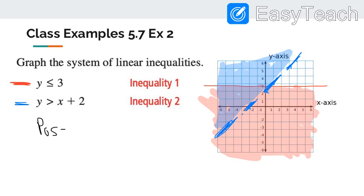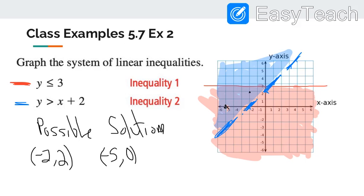Some points that would work: possible solutions would be any of these points inside the double shaded region. We could have (-2, 2), we could have (-5, 0), and we also could have (-6, -2). All of these are possible solutions for this graph.